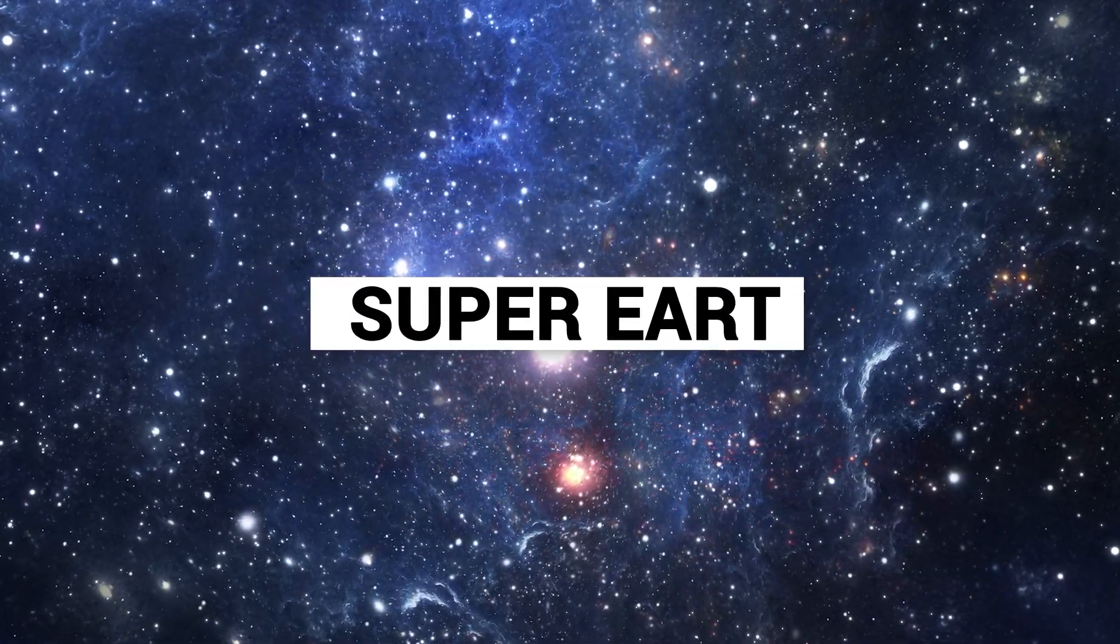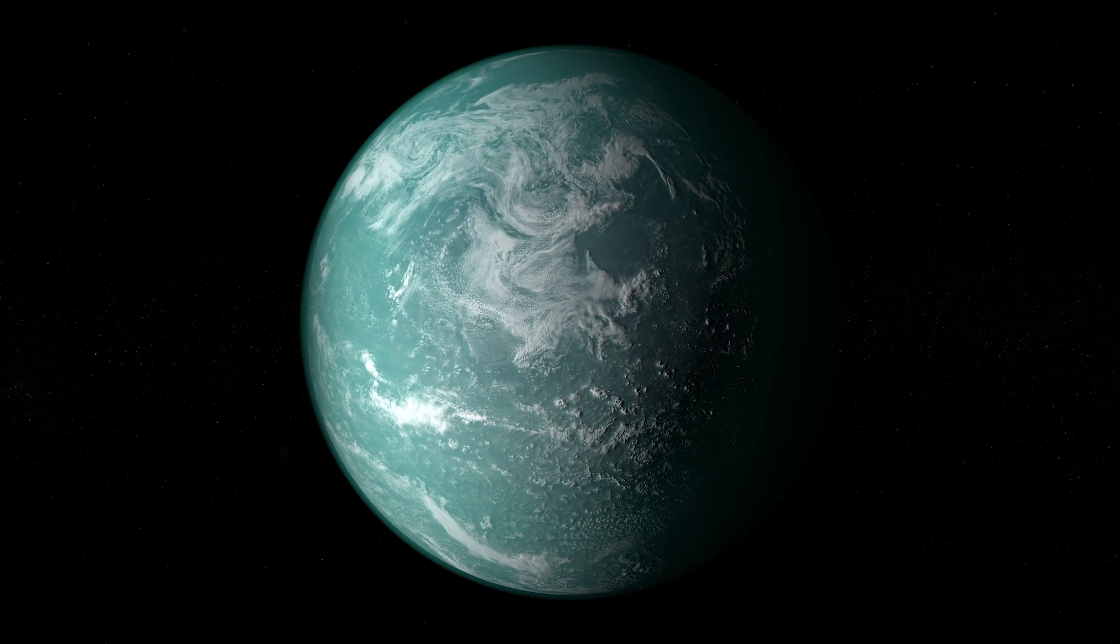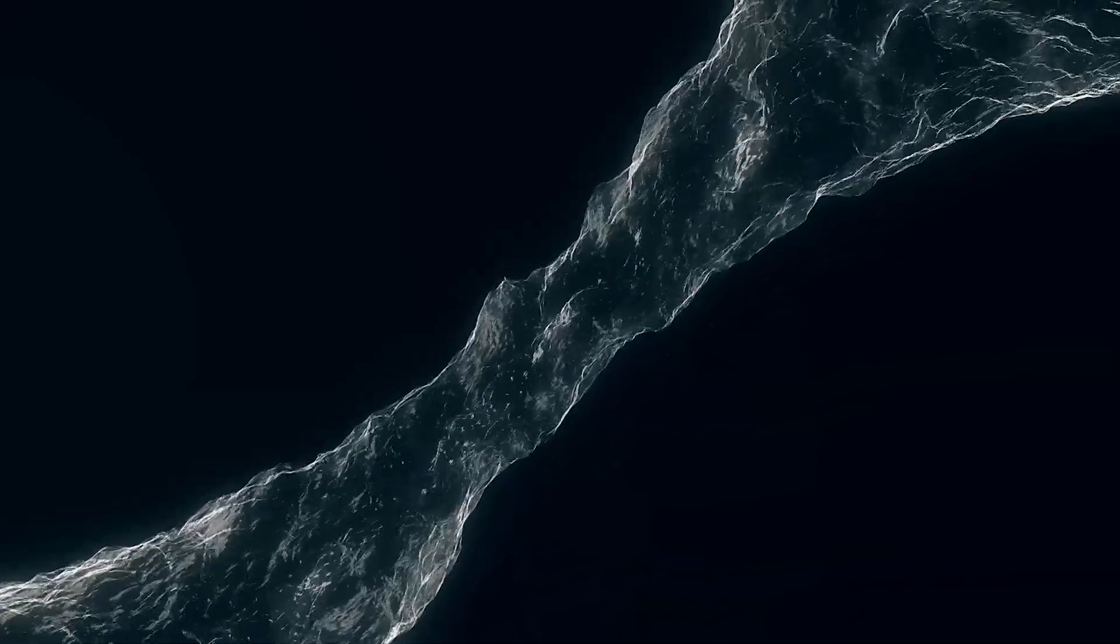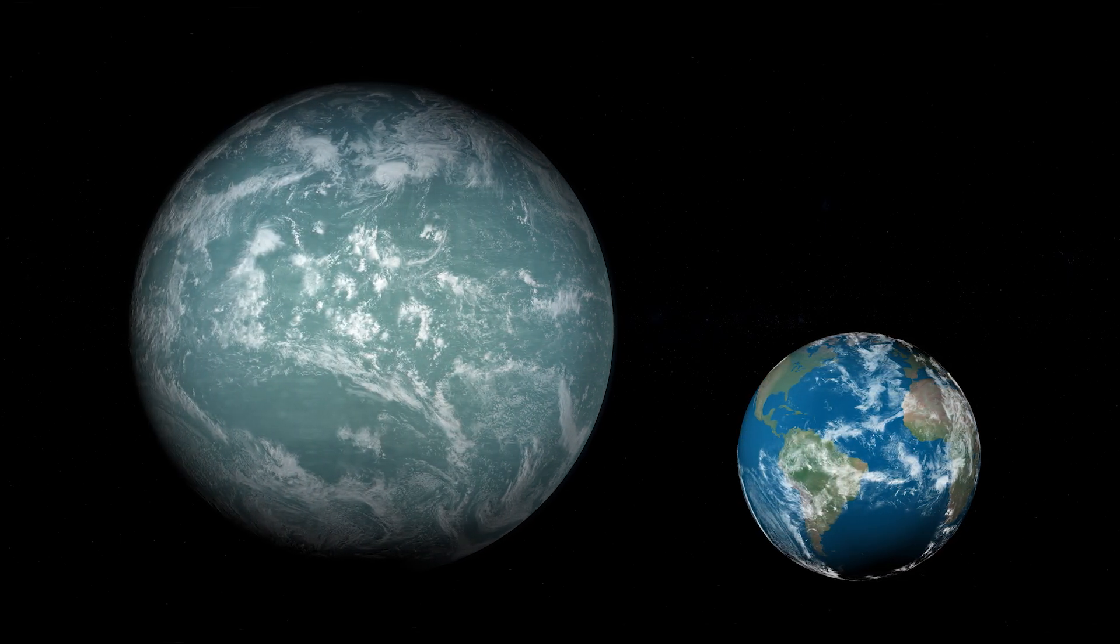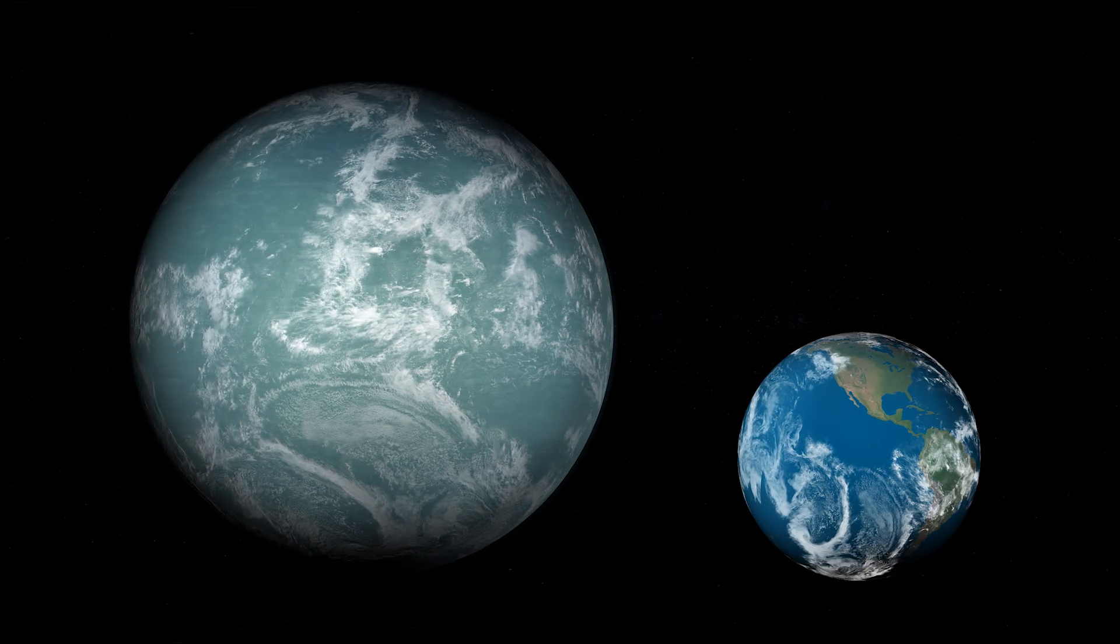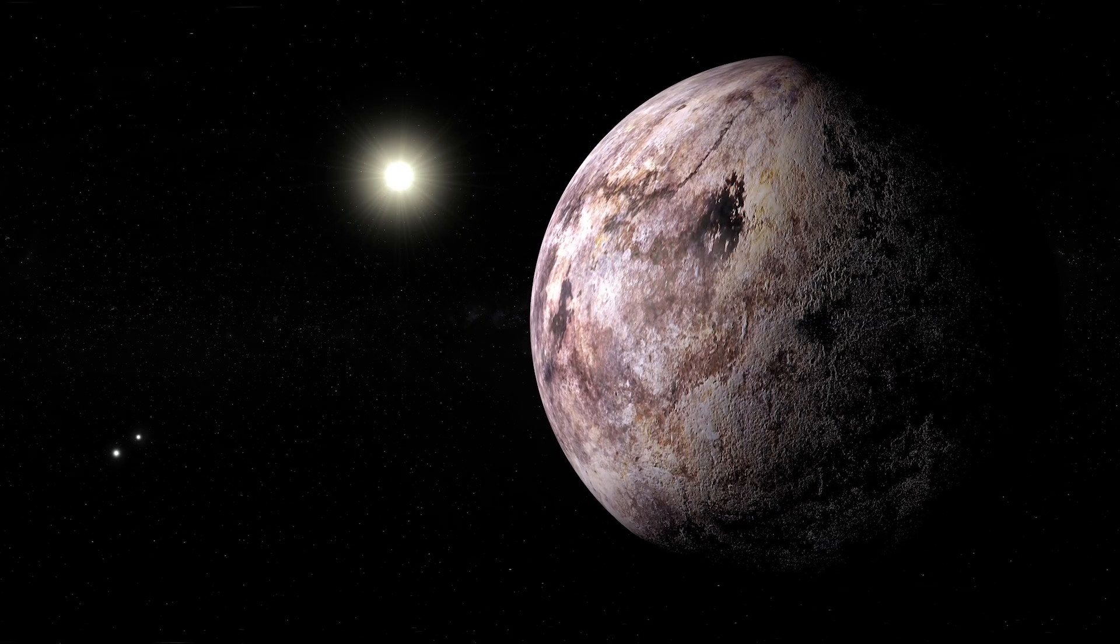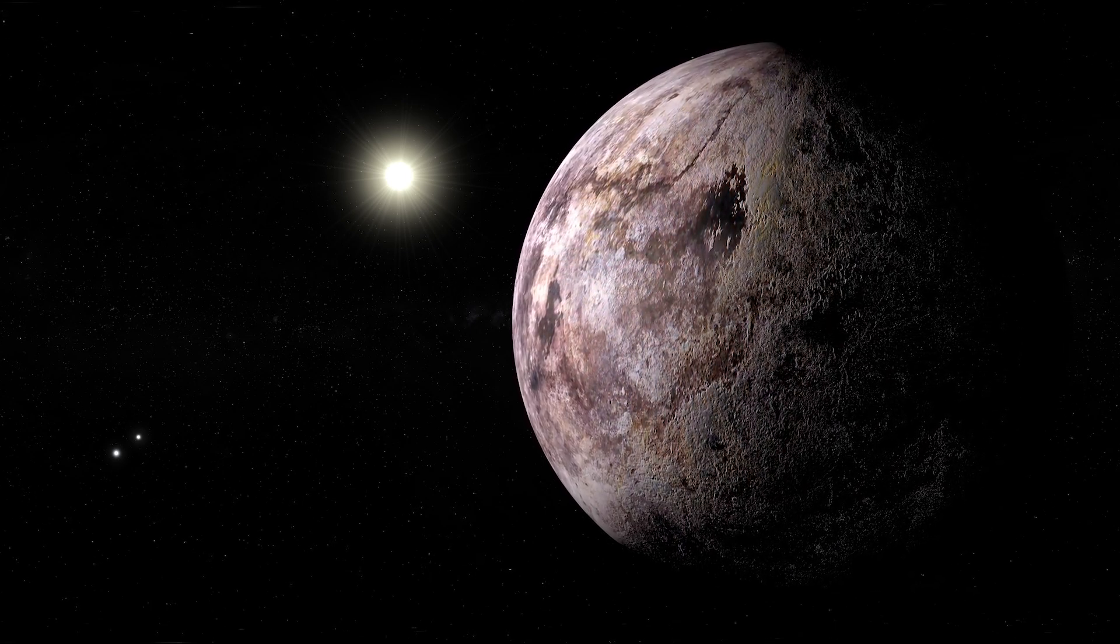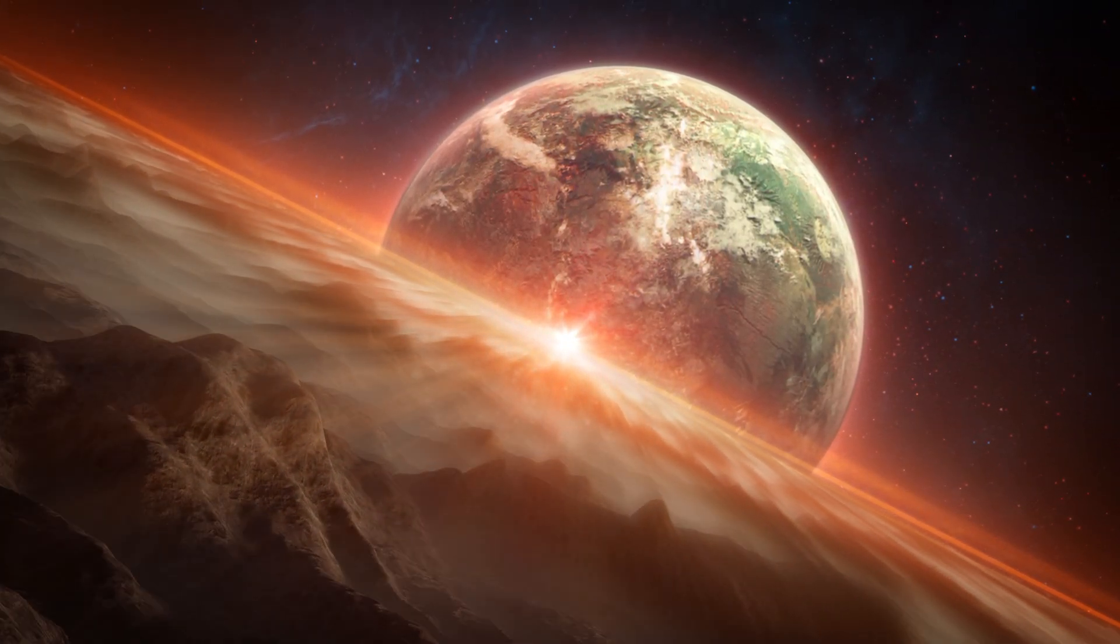Super-Earths in the habitable zone. Planets in the habitable zone, where conditions might allow liquid water, have been discovered around distant stars. Among these are so-called super-Earths, larger than Earth but with conditions that could support life. Planets like Kepler 452b and Proxima Centauri b are tantalizing candidates, raising hopes for future exploration and even potential life beyond Earth.